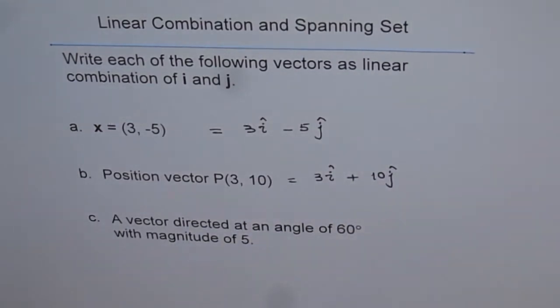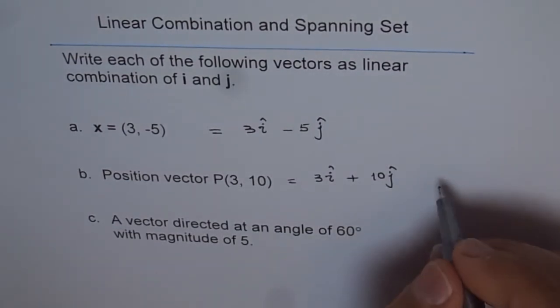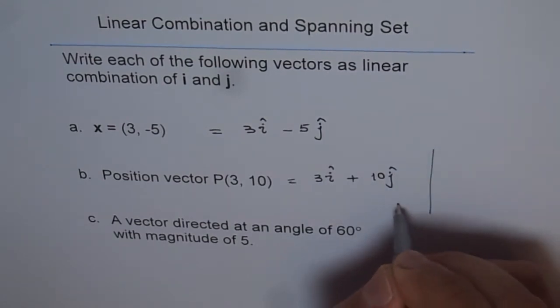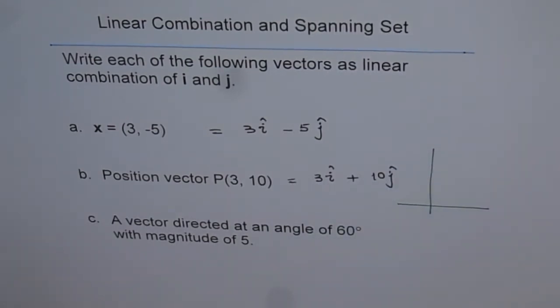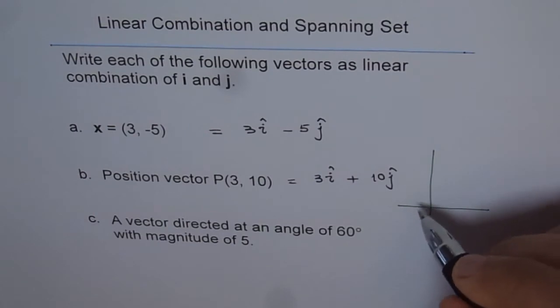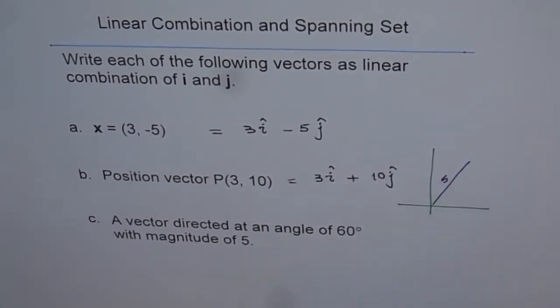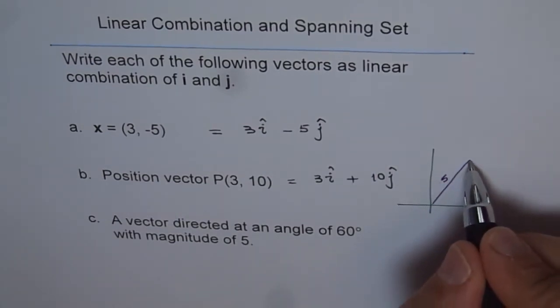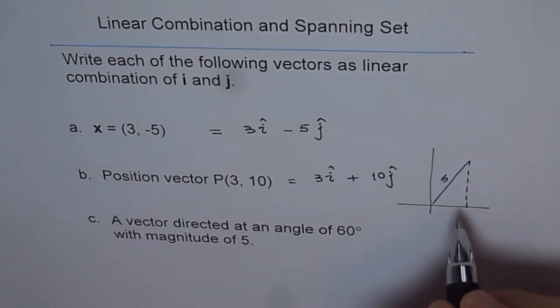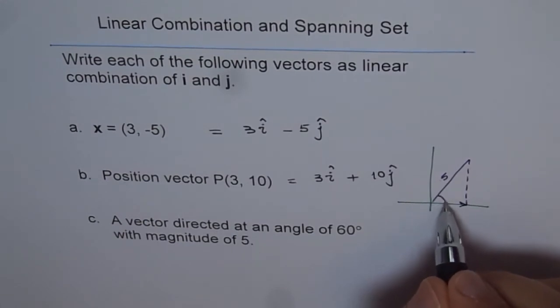Now here we have a vector directed at an angle of 60 degrees with magnitude of 5. So let's try to see what this vector looks like. So we have a vector here which is at 60 degrees. So let's say this is 60 degrees and the magnitude is 5. So if you drop the perpendicular, then the x component will be 5 cos theta which is 60 degrees.